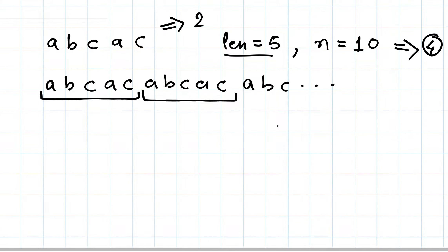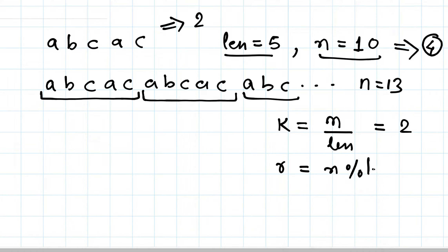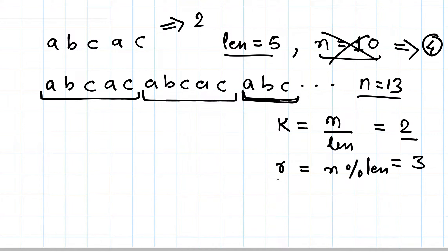How did we calculate that? We found a factor k by how many times the string is repeated: k = n divided by the length of the string. In this case n was perfectly divisible, but there may be a case where n is 13. Then k = 13 / len, which as an integer returns 2, and the remainder r = n modulo len = 3. So we repeat the string k times completely and then take the first r characters of the string. Note that r is strictly less than len.